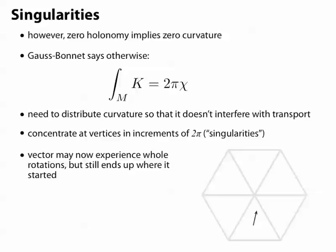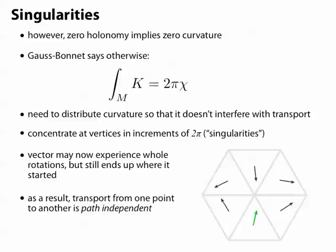So now, if we walk a vector around a loop, it may experience some number of whole rotations, but when it gets back to the beginning, it still ends up where it started. So we do get this nice path-independent notion of parallel transport.